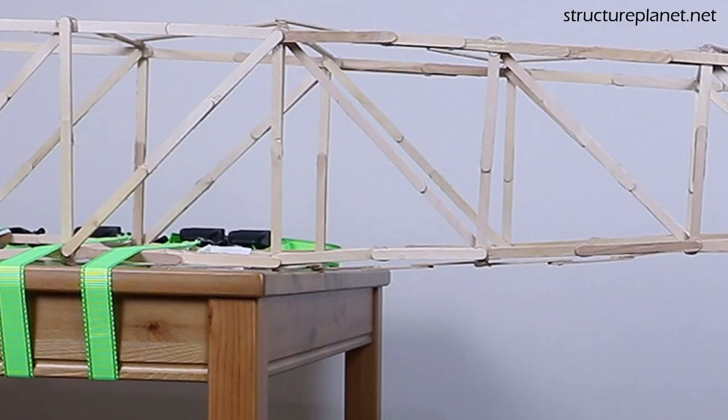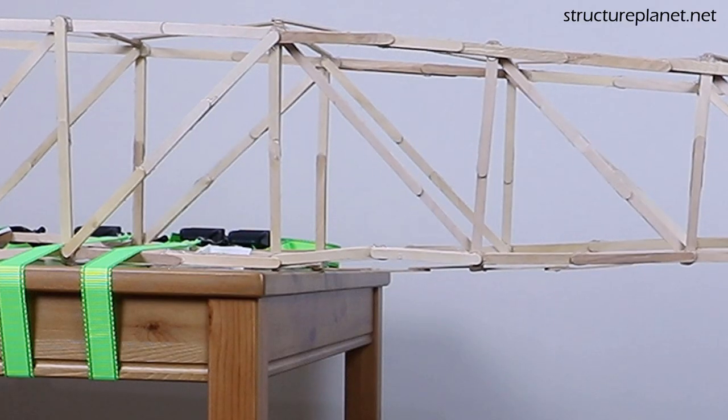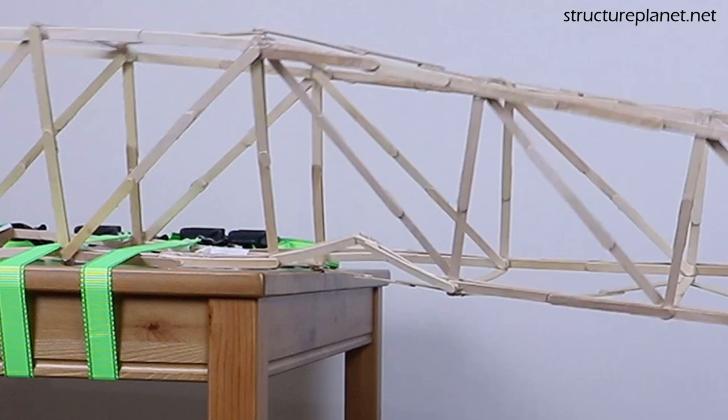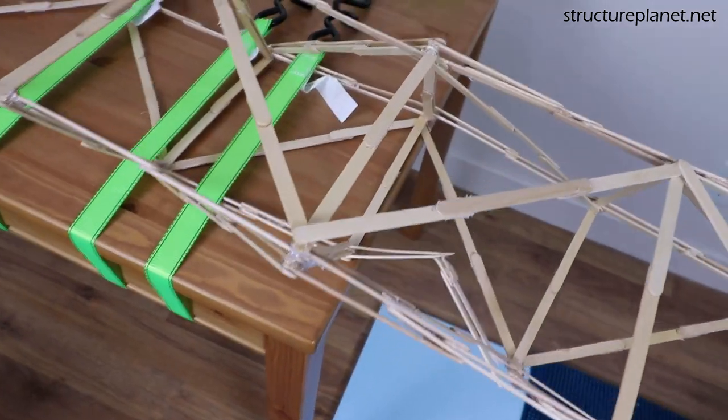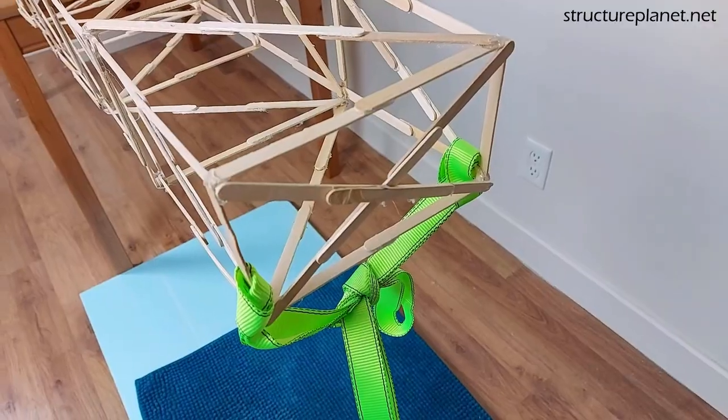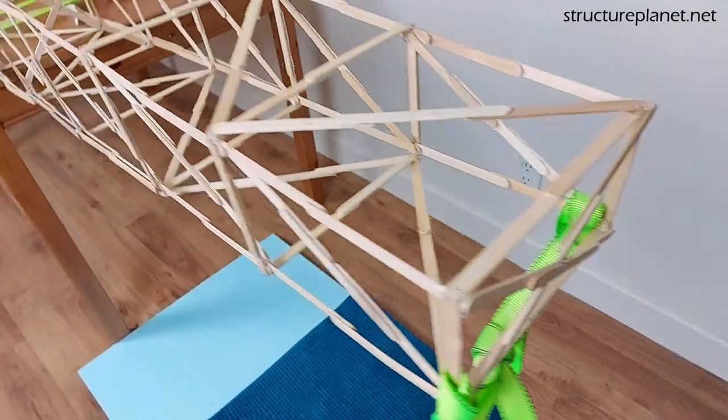As you can see, one of the bottom chord members failed quickly. From the axial load diagram, this member had the maximum compressive load in the structure. I also noticed that there is a lean on the structure which might have been due to an eccentric loading.